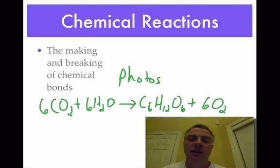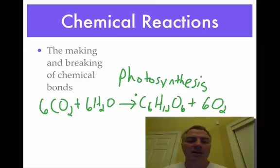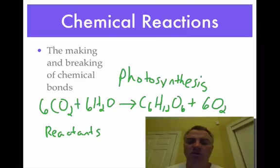Photosynthesis, of course, is very important to us. But this is a good example of a chemical reaction. Chemical reactions take place constantly in your body, in all organisms' bodies. It's the making and breaking of chemical bonds. What happens here is the breaking of the bonds between the carbon and the oxygen, and the hydrogen and the oxygen end up yielding these two products. A couple of terms here I want you to be familiar with: reactants are everything on the left side of the arrow, and over here are your products.